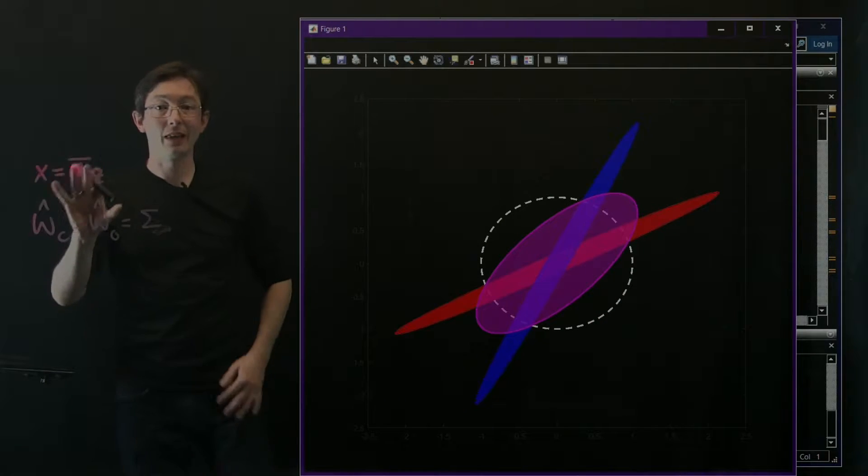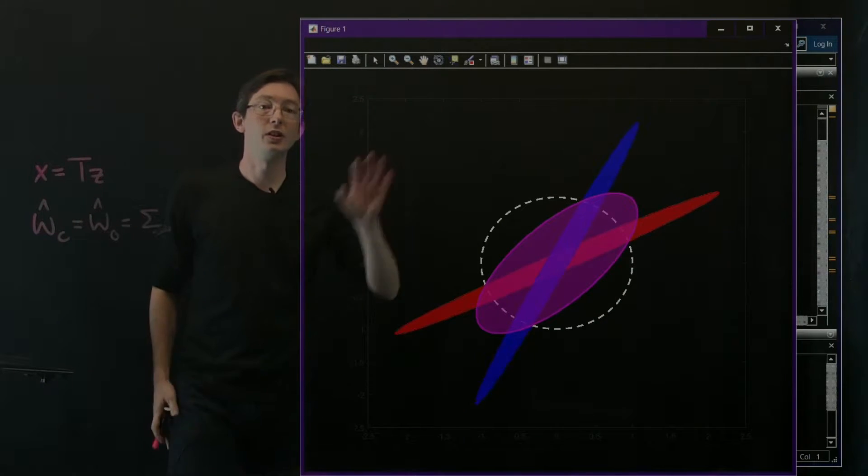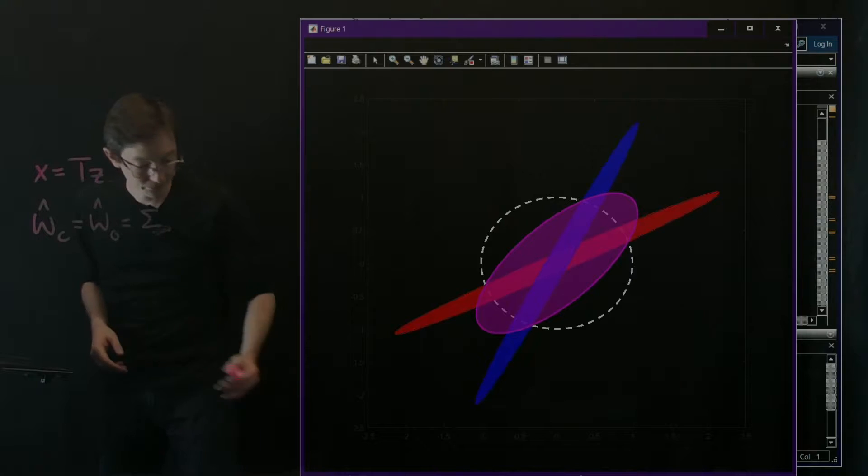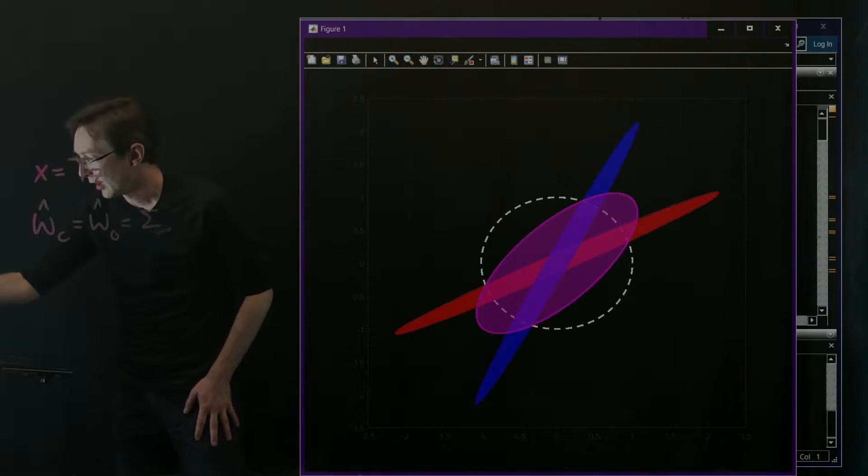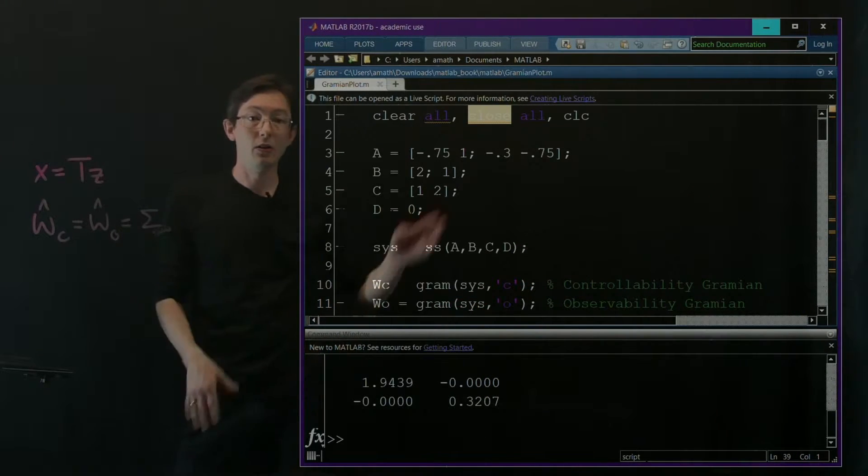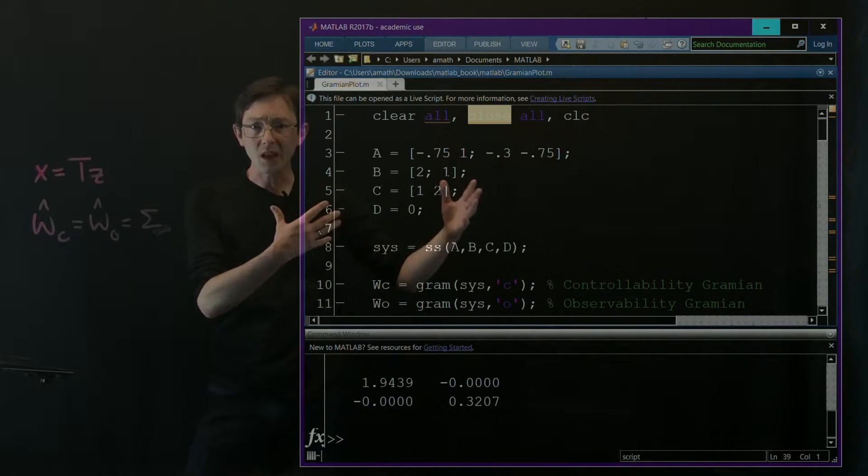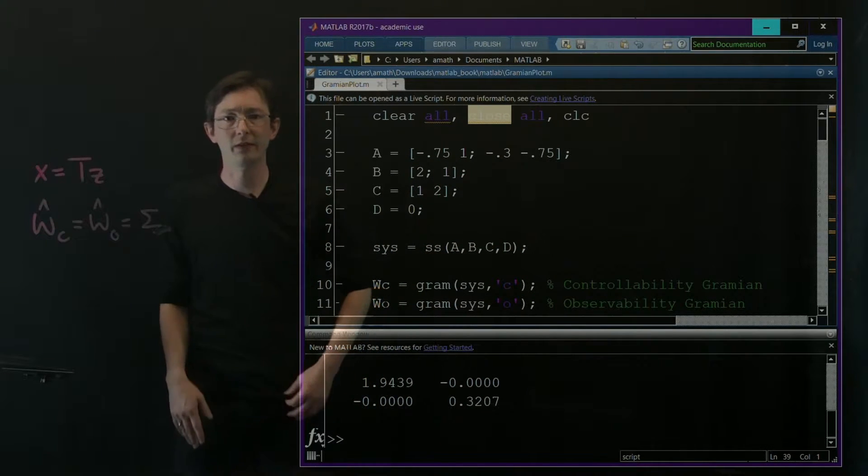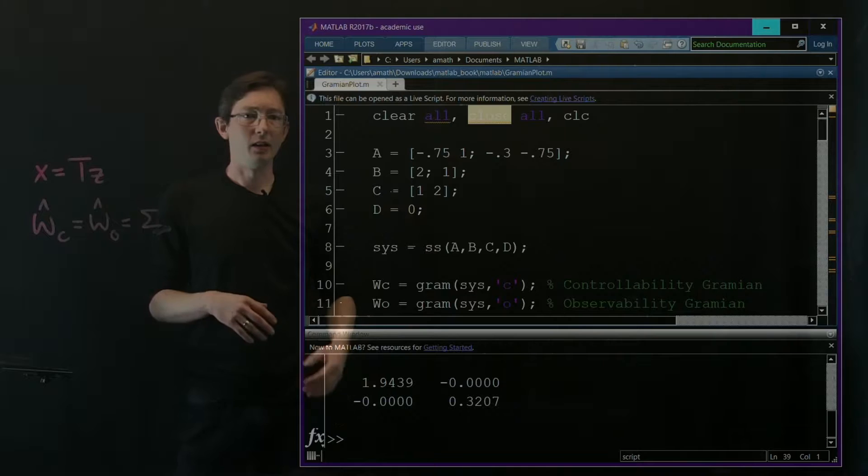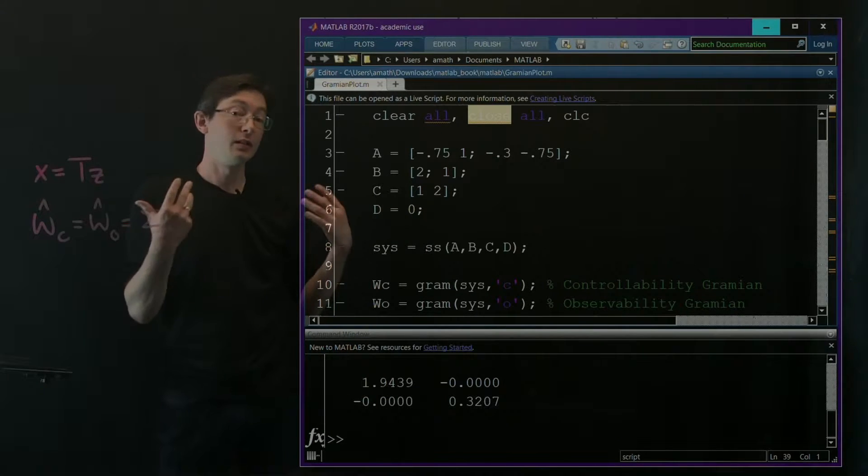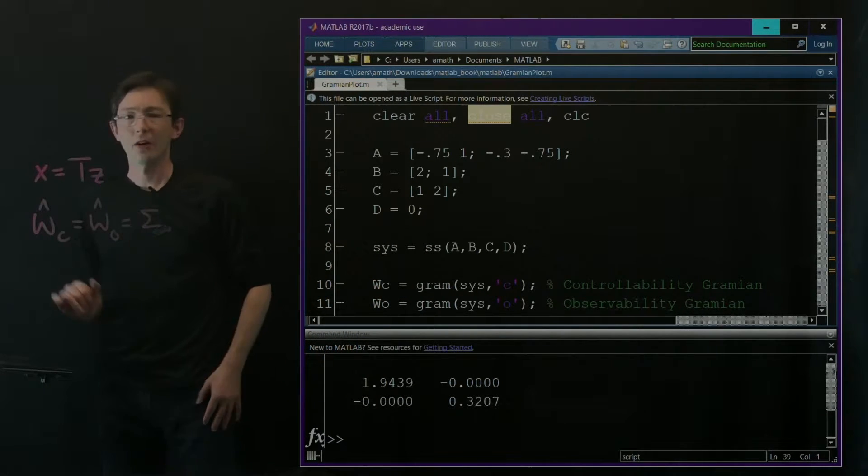So that's what we're going to do in MATLAB is cook up this balancing transformation and balance these Gramians. And you can do this at home. The script is online, links to all the codes are available. This is also in the book on data-driven science and engineering.